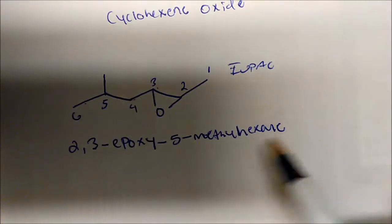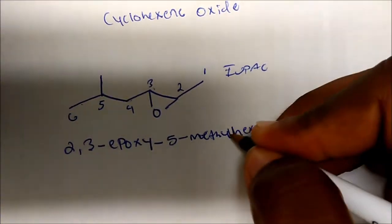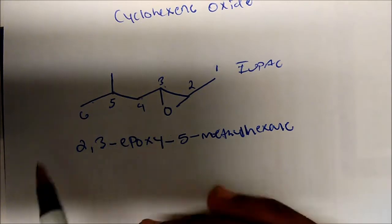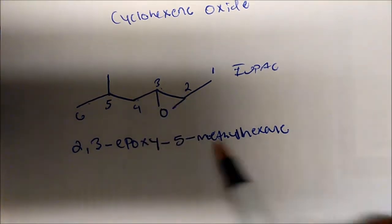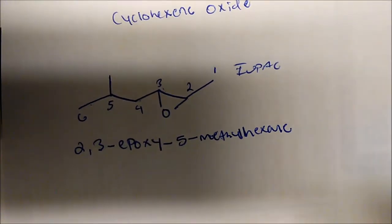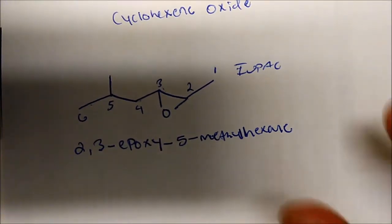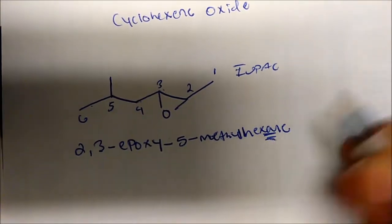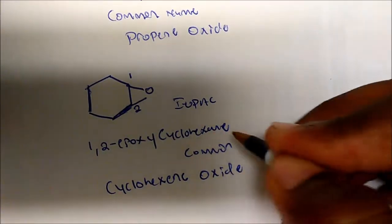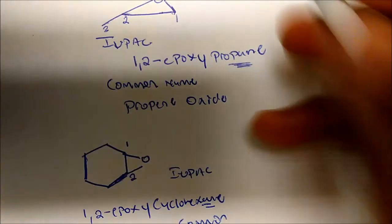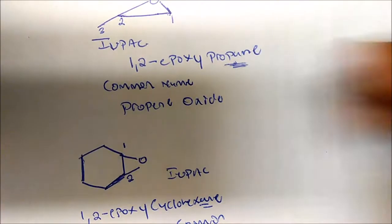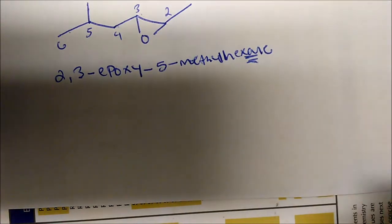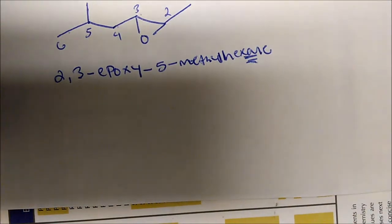So the longest continuous chain is hexane — one, two, three, four, five, six — and we have 2,3-epoxy-5-methylhexane. Notice that with all IUPAC names we end up with an alkane at the end — whether it's propane, ethane, hexane, whatever. Now what would be the common name for this molecule?